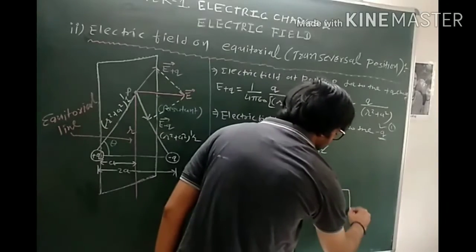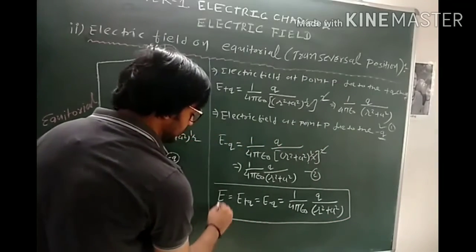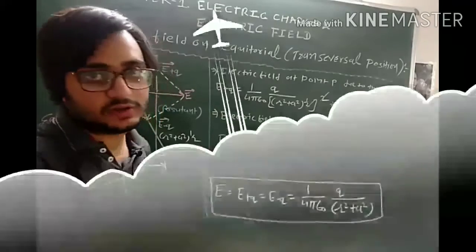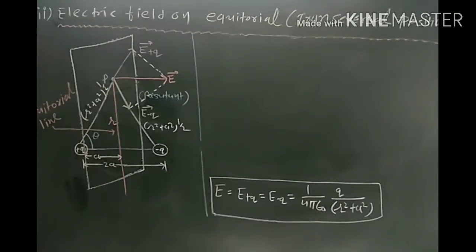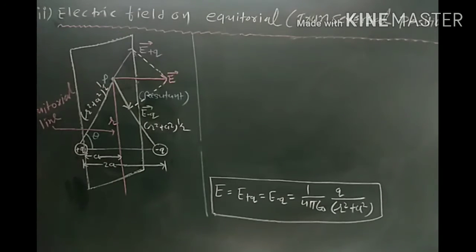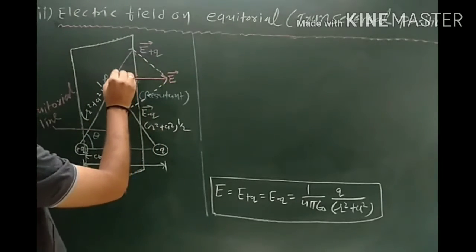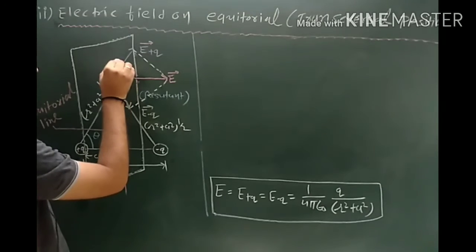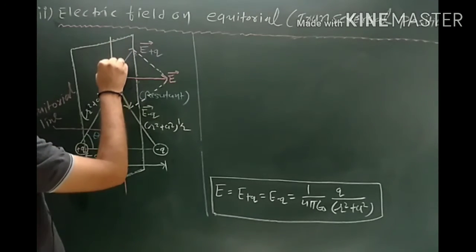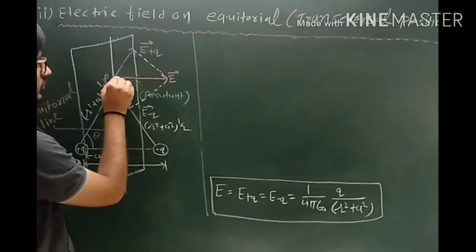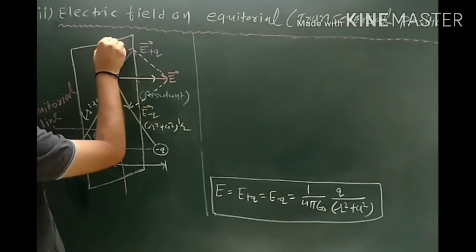This gives the magnitude of the electric field at point P. Now we need to find the direction at point P. For the electric field E(+q), we take two components: one horizontal and one vertical.